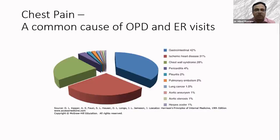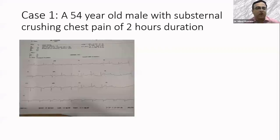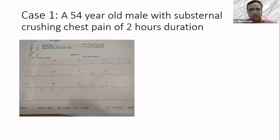The first ECG is a 54-year-old male with substernal crushing pain of two hours duration. At first glance there is a little bit of ST depression in leads 2, 3, and AVF — nothing much. One must always remember that the first ECG in an ST elevation MI may not show ST elevation. The ECG was sent to me on WhatsApp, and by the time I reached the casualty, I asked them to repeat it in 10 minutes. Now you can see clearly there are ST elevations in leads V1 to V3, and the ST depressions seen earlier in 2, 3, AVF were actually reciprocal ST depressions appearing a little earlier.